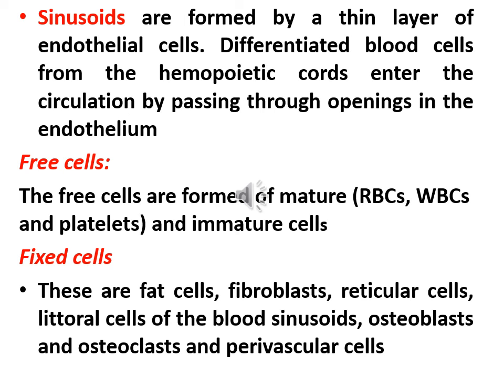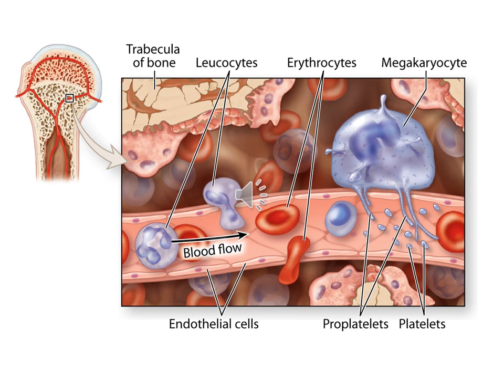Fixed cells include fat cells, fibroblasts, reticular cells, littoral cells of blood sinusoids, osteoblasts, osteoclasts, and perivascular cells. This figure shows the passage of formed cells in the bone marrow through openings in the blood sinusoid, between endothelial cells, and their passage into the blood circulation.